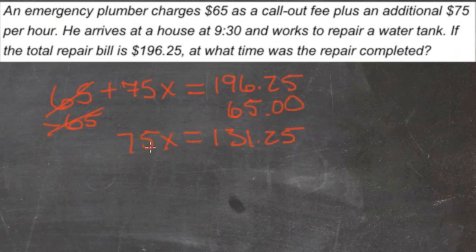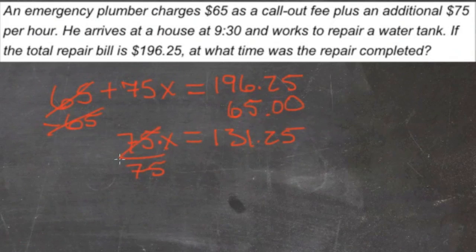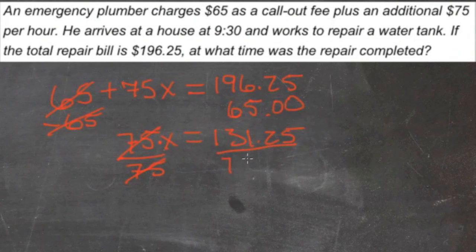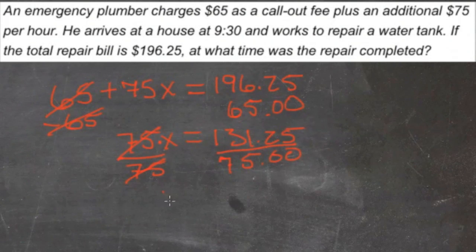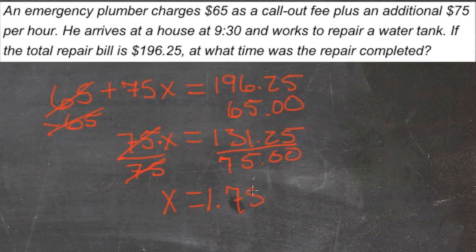Then we need to get rid of the $75, so we'll divide both sides by $75, since we're multiplying here. $131.25 divided by $75.00 gives us x equals 1.75. So he was there for one and three quarters of an hour.